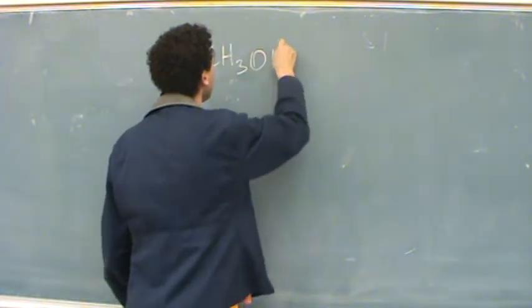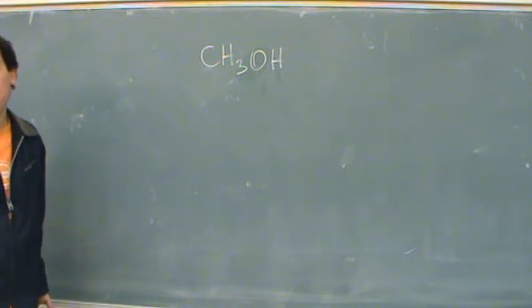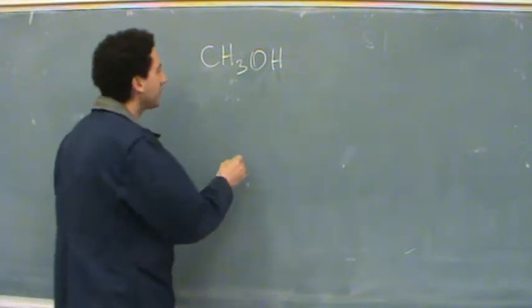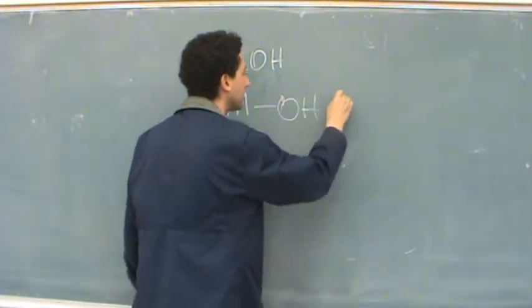CH3OH, it's methanol, wants to know if this is an acid or a base. Most students are going to look at this and say it's a base and be actually totally wrong because bases have a metal connected to an OH, so this is a base.